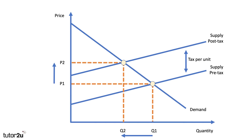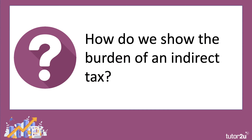In equilibrium, the new price will be P2 and quantity Q2, because there's been a fall in supply and the market now clears at a higher price P2 and a lower quantity bought and sold. There's going to be a contraction up the demand curve because the price has gone up. A tax increases costs, raises prices, and causes a contraction of demand.